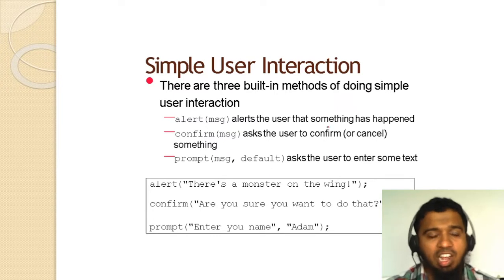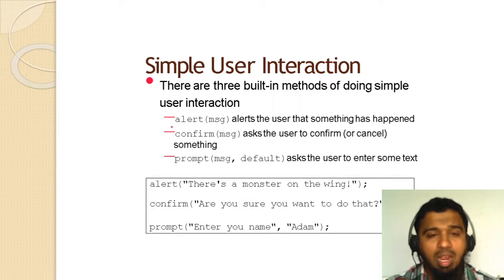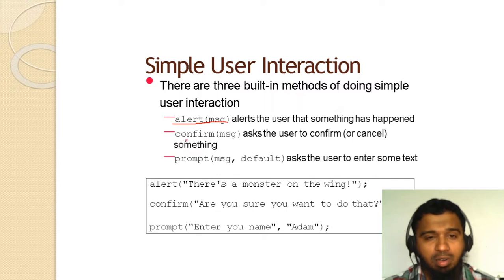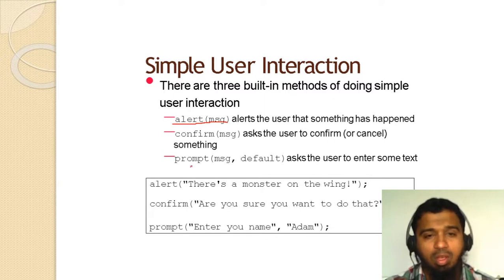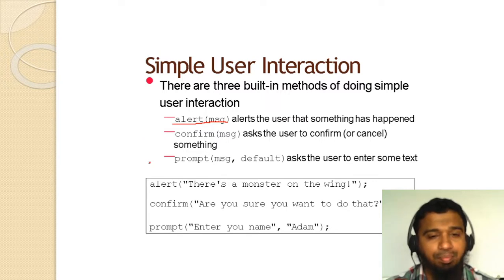How does simple interaction between user and JavaScript work? There are three built-in methods for simple user interaction: alert message — alerts the user that something has happened; confirm message — asks the user to confirm or cancel something; and prompt message — asks the user to enter some text. These are the three important interactions: alert, confirm, and prompt.